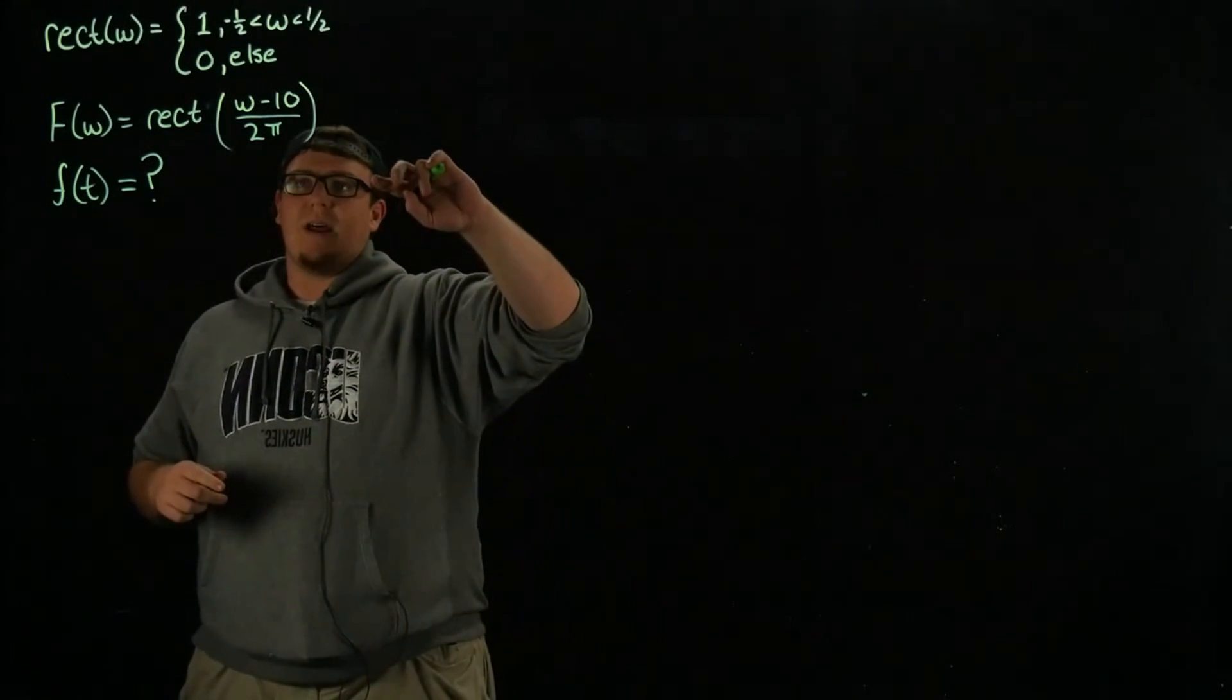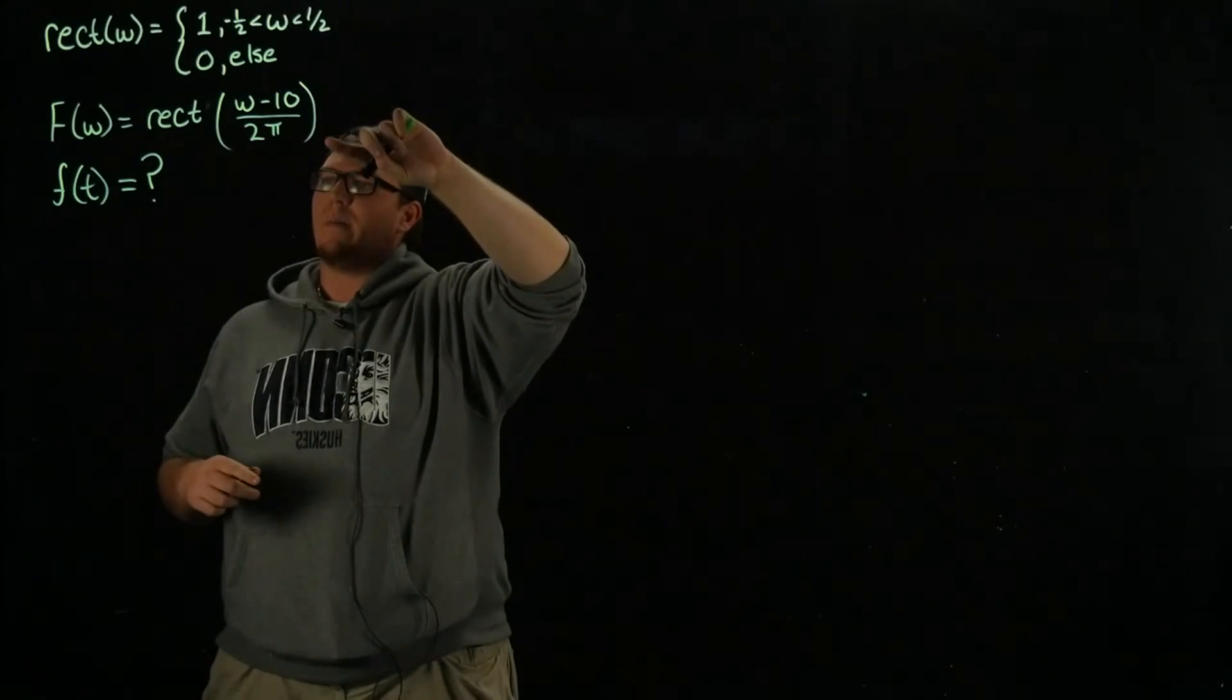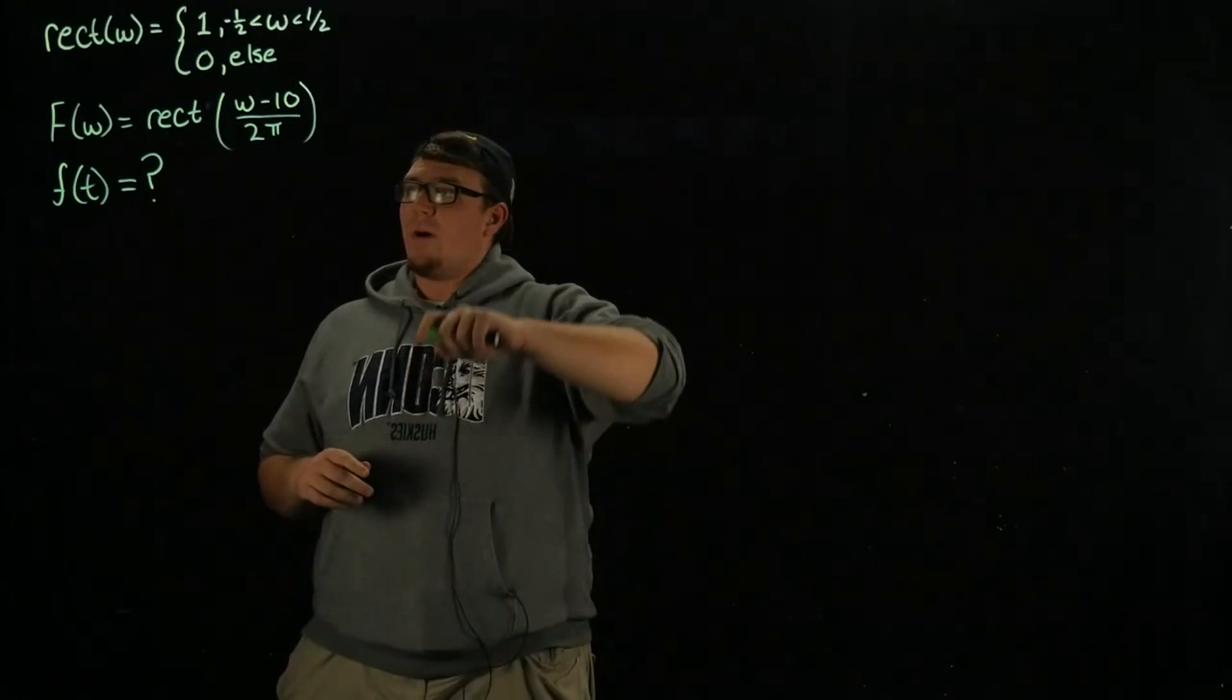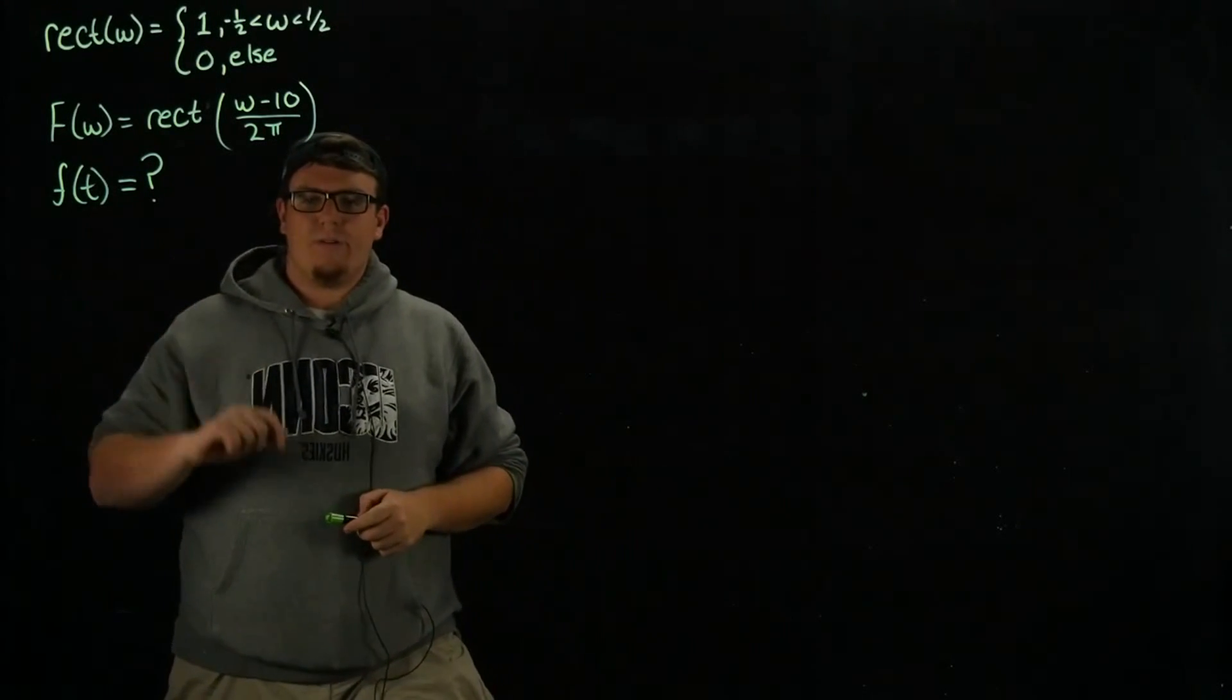The function that I'm going to take the inverse Fourier transform of today is f of omega equals the rectangle function of omega minus 10 over 2 pi, where the rectangle function of omega is defined up here. We're looking for f of t.